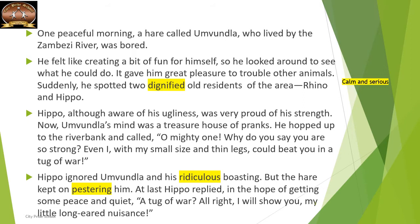These dignified residents deserve respect — like we call a dignified guest or judge who has a reputation or position. So here, he is calling Rhino and Hippo the two deserving residents of that area. He wanted to trouble those two animals. Hippo, although aware of his ugliness, was very proud of his strength. Umundla's mind was a treasure house of pranks. He hopped up to the river bank and called out, 'Oh mighty one! Why do you say you are so strong? Even I, with my small size and thin legs, could beat you in a tug of war!'